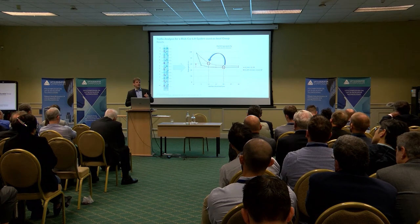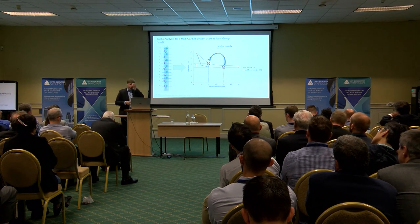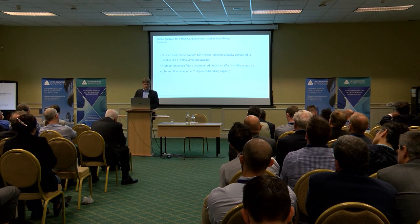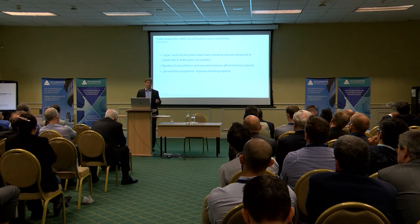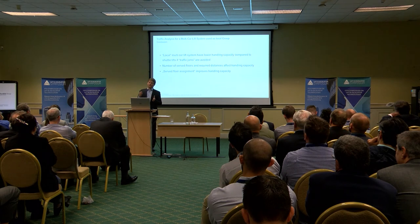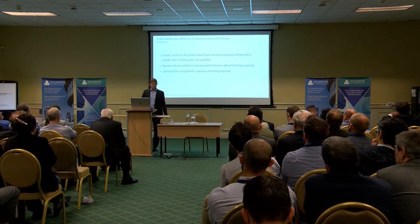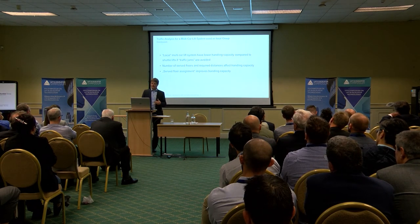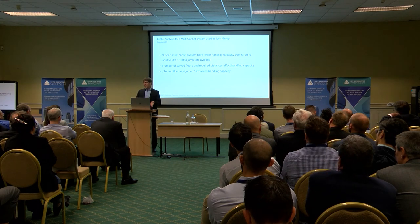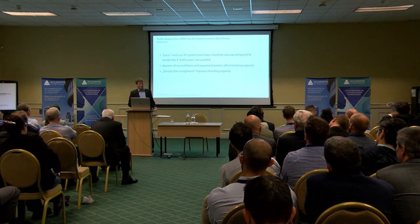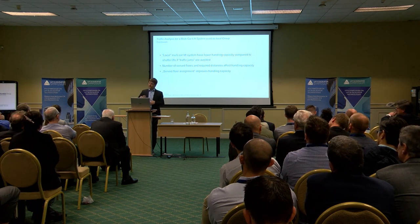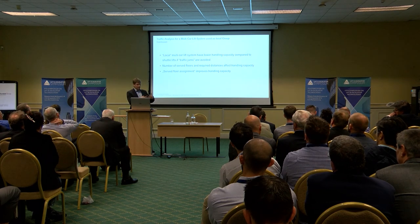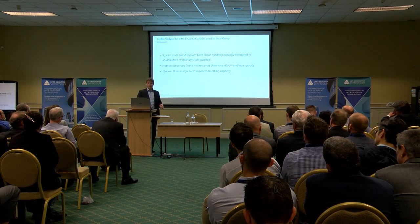When zoning is done with upper floors and lower floors — rather than interleaved zoning — we don't get the benefit of moving to the orange line. In conclusion: when a circulating multi-car lift system is operated as a local group compared to shuttle lifts, the handling capacity is lower when avoiding traffic jams. The number of served floors and the required distance between cars affect handling capacity, and interleaved zoning improves handling capacity similarly to traditional rope lifts.